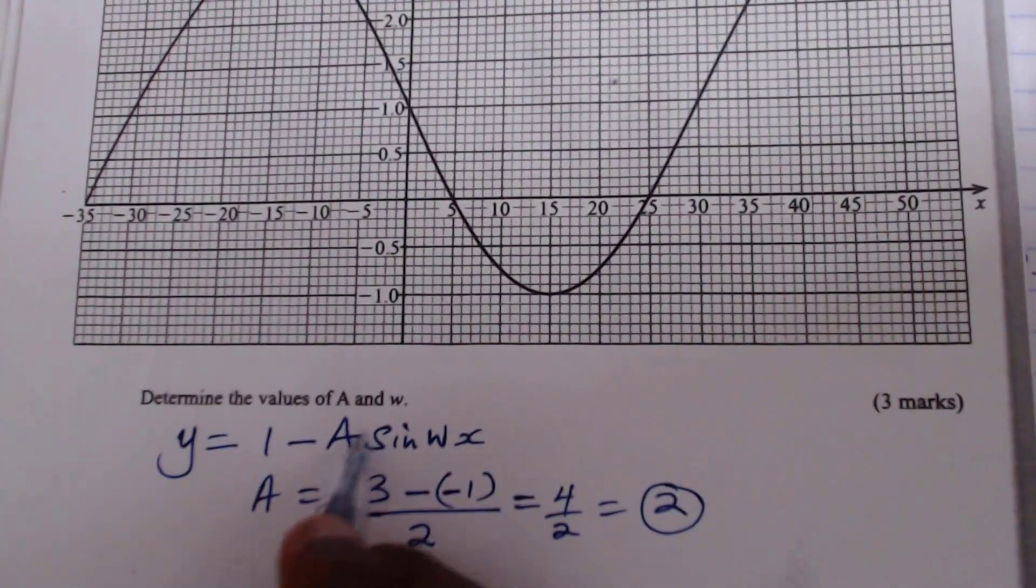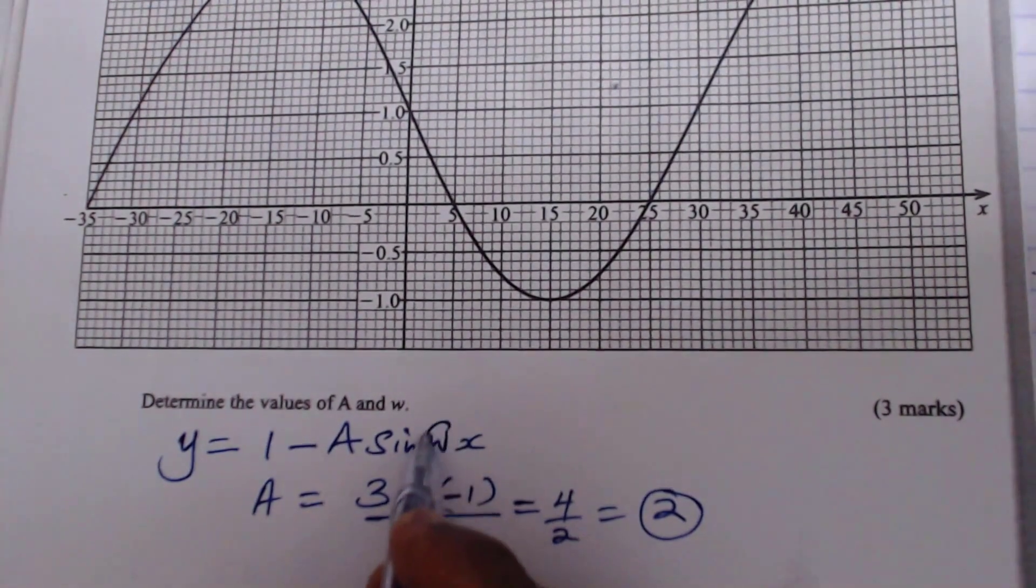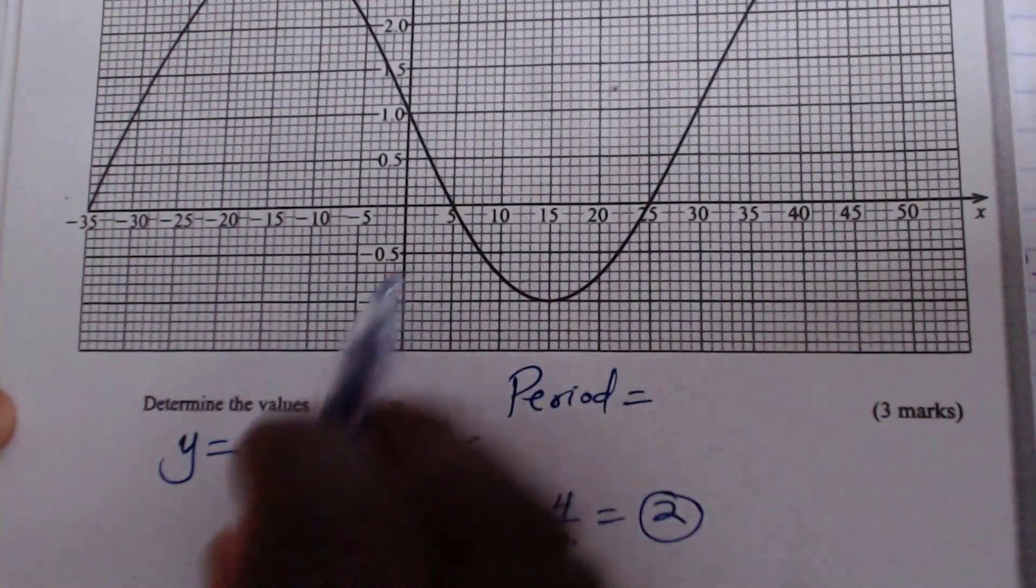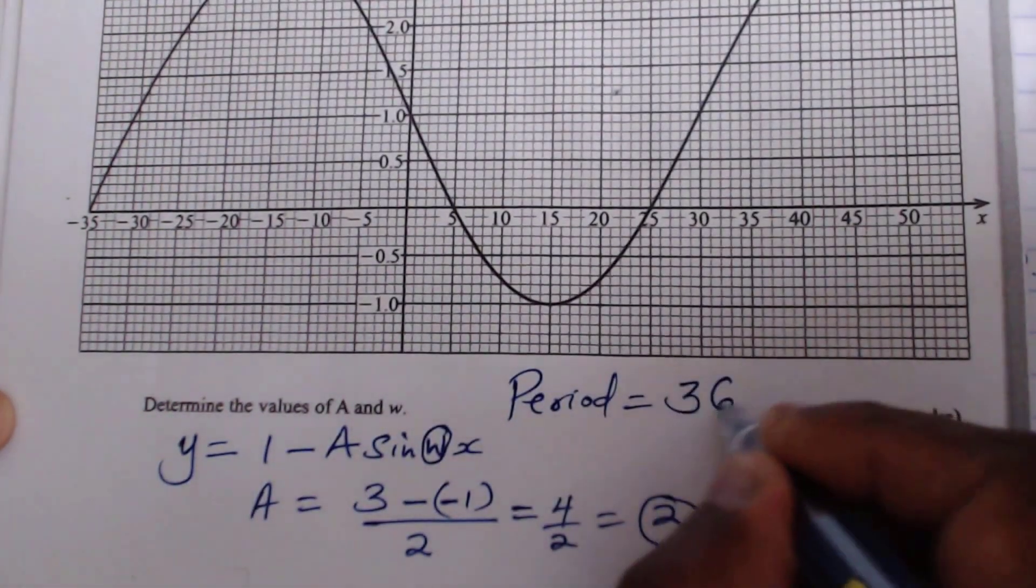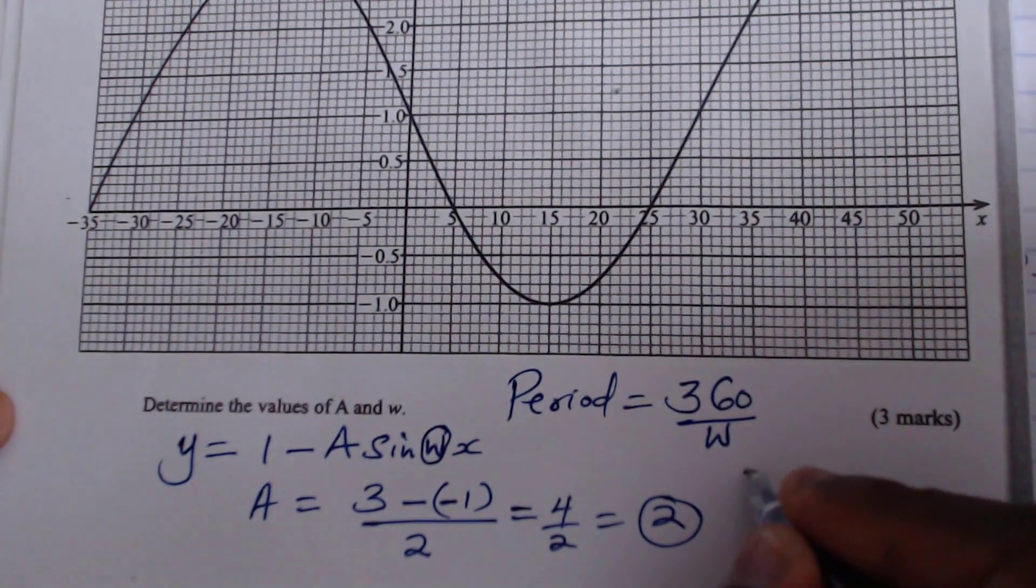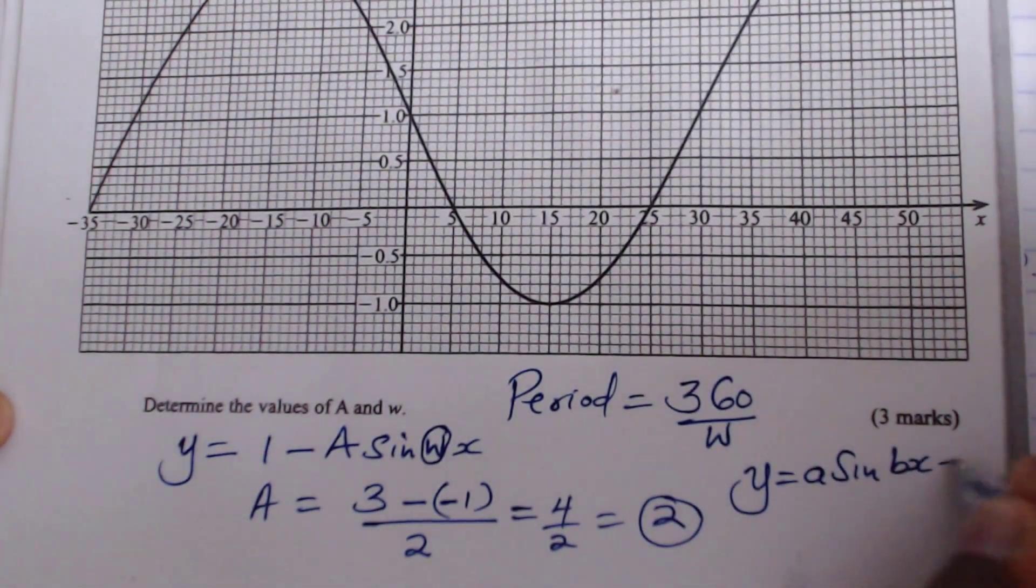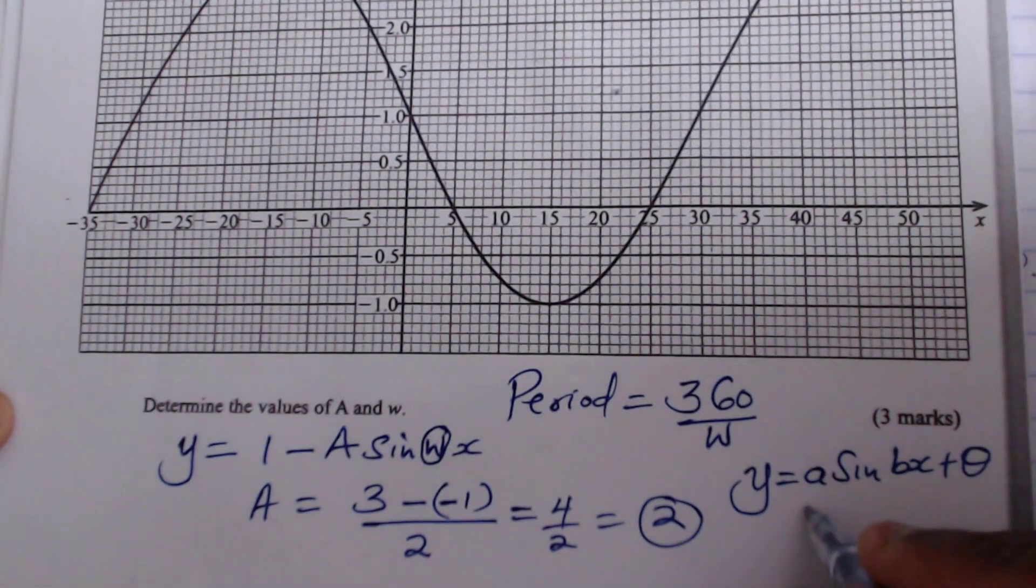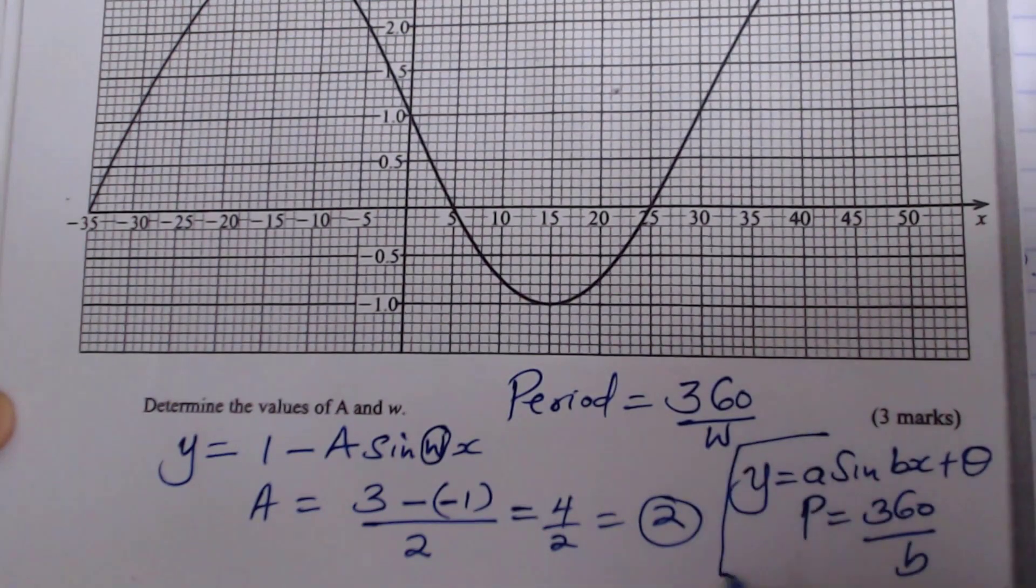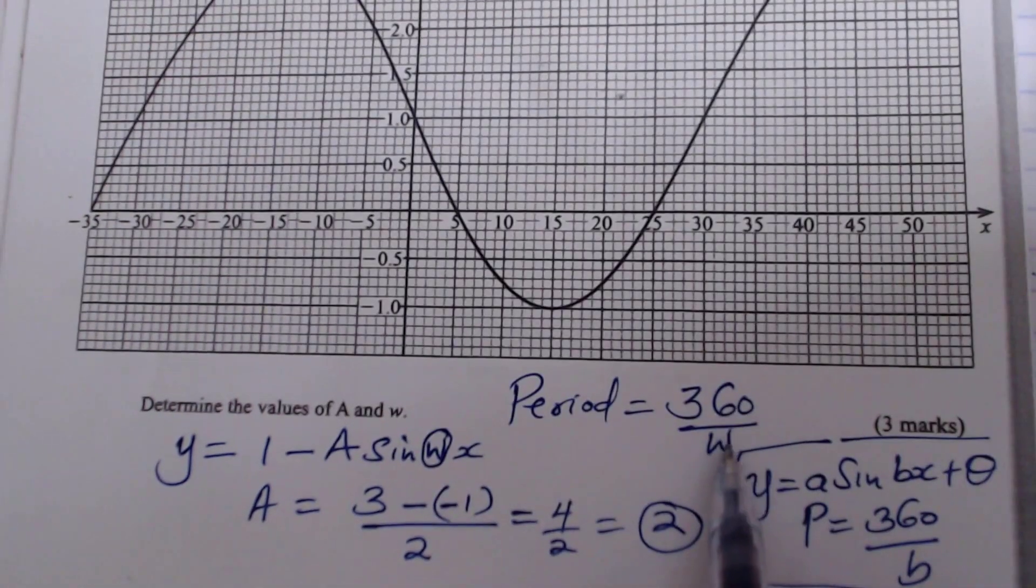Now let's go to W. Now W, we're going to use the period to get this value of W. So how do we get the period? To get the period of this curve, we get it by using this formula: 360 divided by W. Remember, for any function of the form A sine Bx plus theta, the period is given by 360 divided by B. So in this case, the period of this curve, looking at this function, will be given by 360 divided by W.